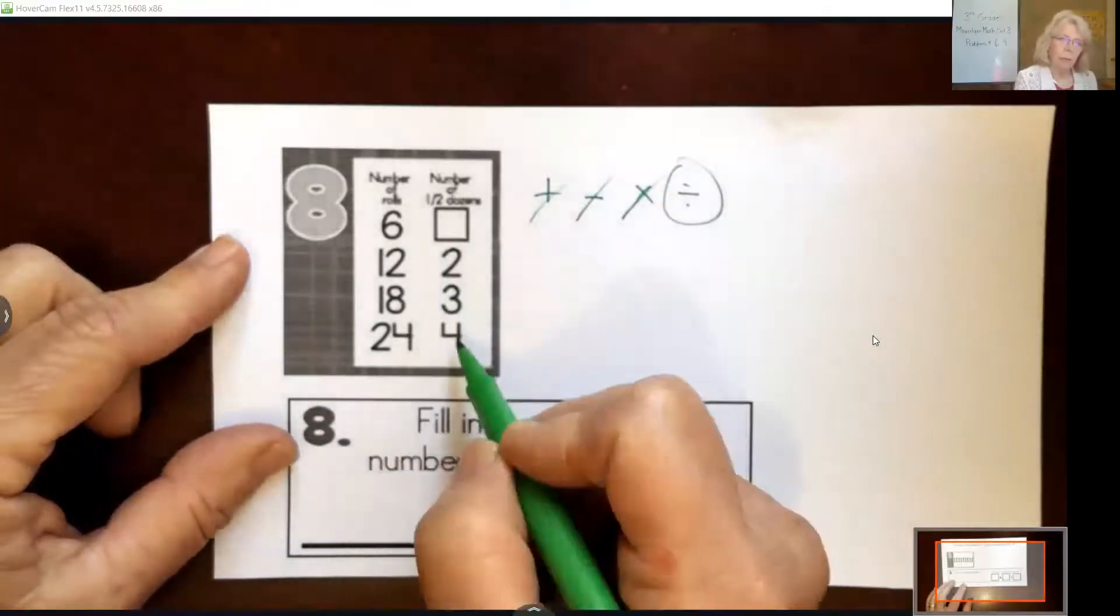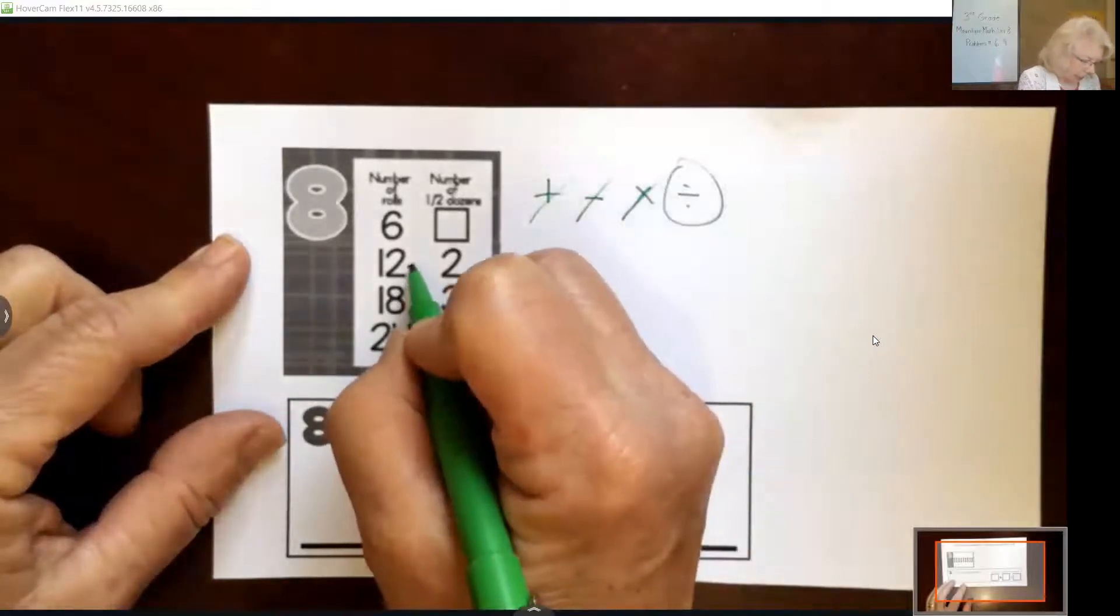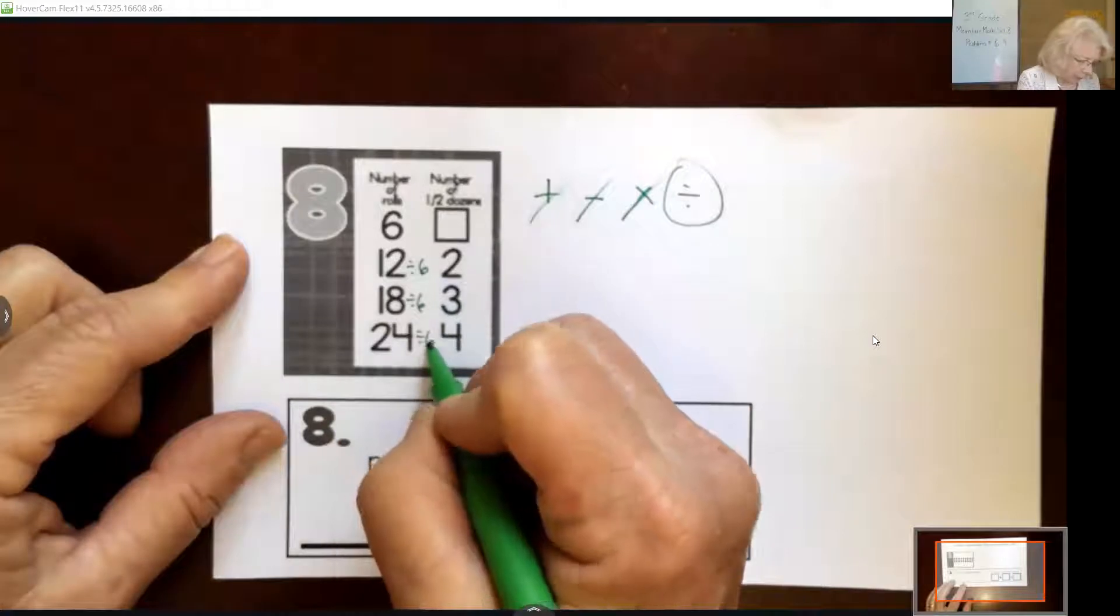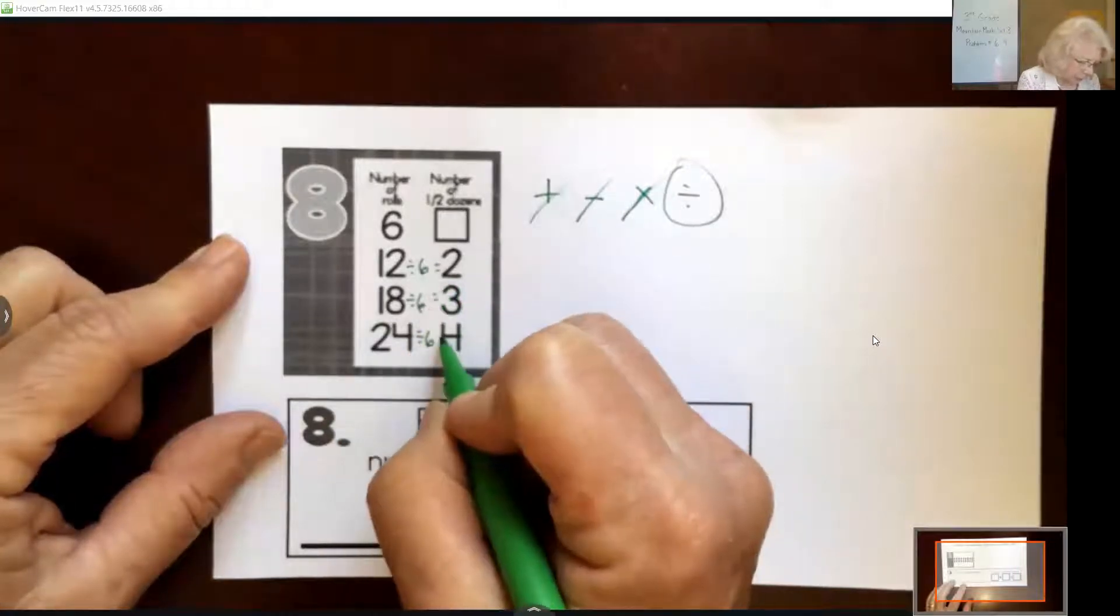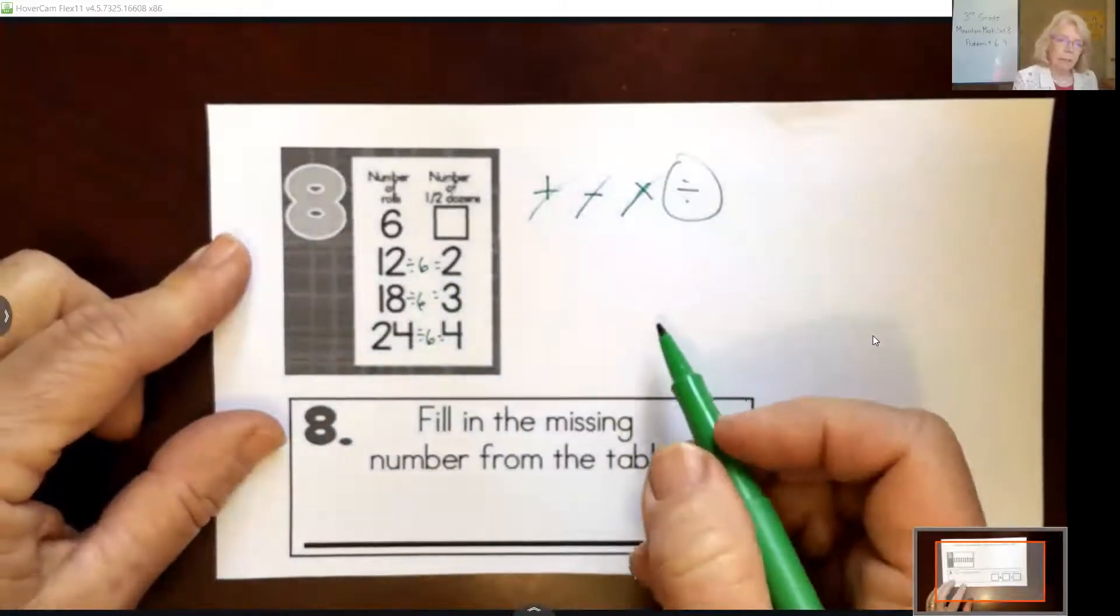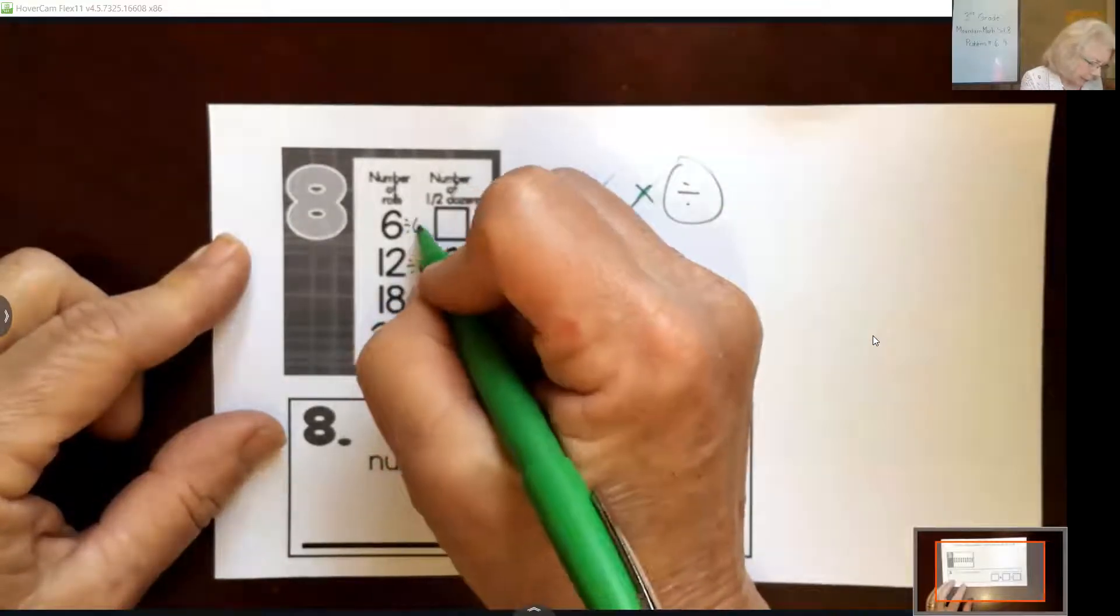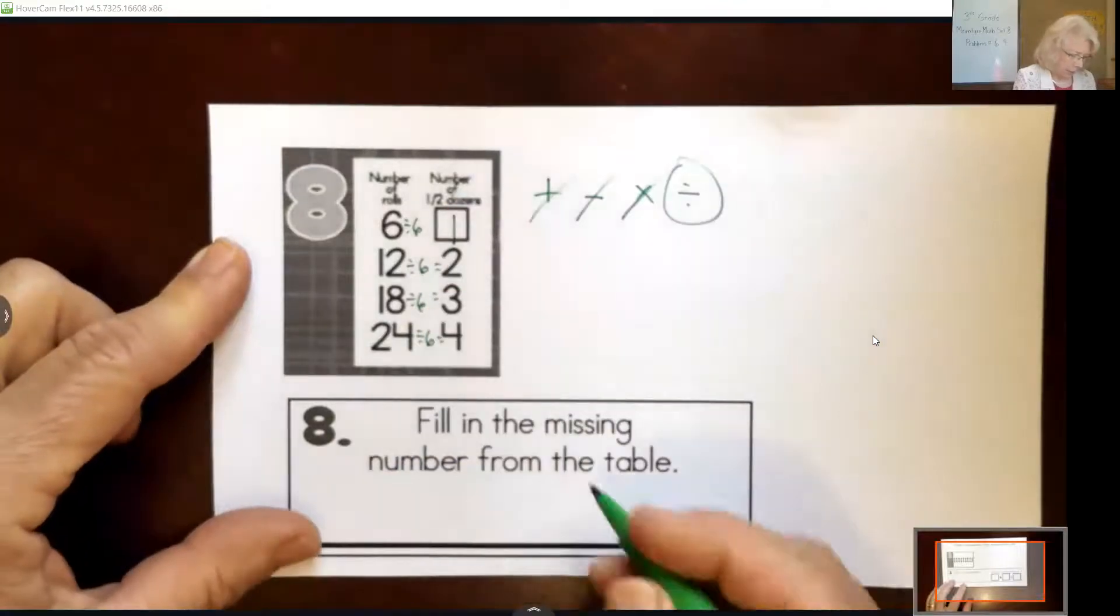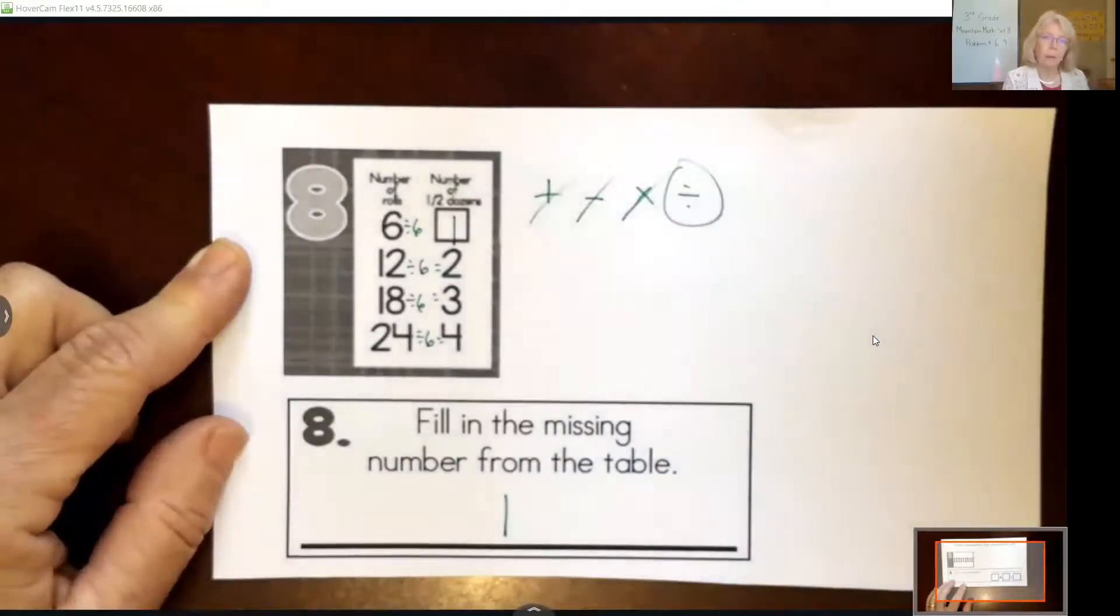And then we just need to figure out what are we dividing these numbers by, and it turns out to be 6, and we can check that to make sure it's true. So that means we're going to divide 6 by 6, and any number divided by itself gives us 1. So our missing number is 1.